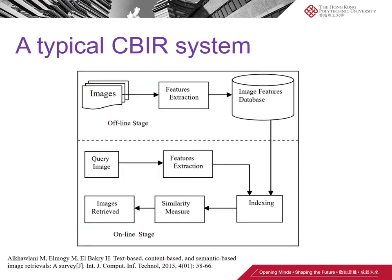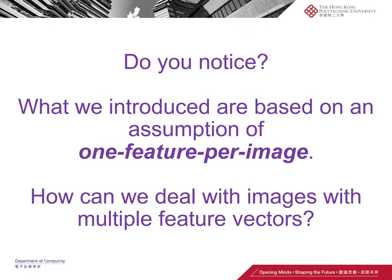This is a typical CBIR system. At the offline stage we do feature extraction and store feature vectors in the database. At runtime when a query is issued, we extract the feature vector and compare it to the indexing structure. Based on the index structure, similarities are used for ranking and preparing the ranked list at the online stage. CBIR is quite straightforward and it's the easiest way to use feature vectors for image retrieval.